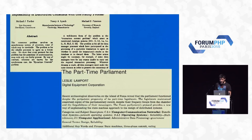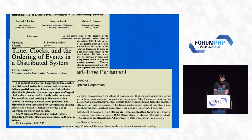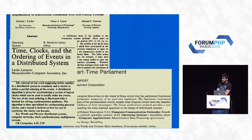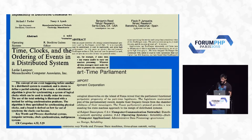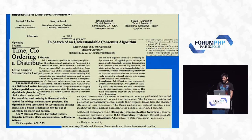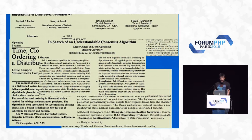Then there is 'Part-Time Parliament' — that's the Paxos paper. There is 'Time, Clocks and the Ordering of Events in a Distributed System,' the pioneer paper on distributed systems by Leslie Lamport, which every talk and paper on distributed systems will mention. There is 'A Simple, Totally Ordered Broadcast Protocol' — this is what ZooKeeper uses, from Yahoo; the protocol is called Zab. And 'In Search of an Understandable Consensus Algorithm' — that's the Raft paper, another consensus algorithm.